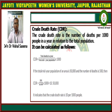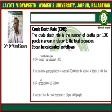The CDR can be defined as the number of deaths per 1000 people in a year in relation to the total population. Mathematically, CDR equals total number of deaths in a year divided by total mid-year population, multiplied by 1000.